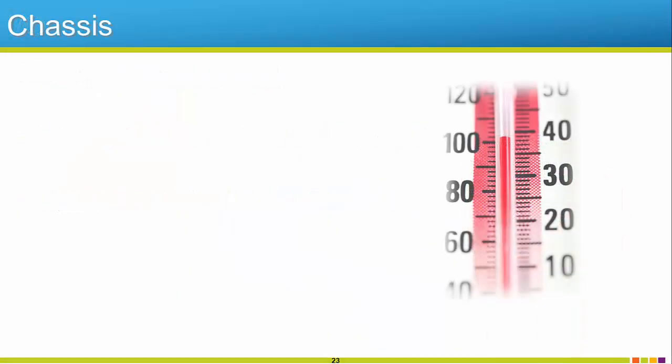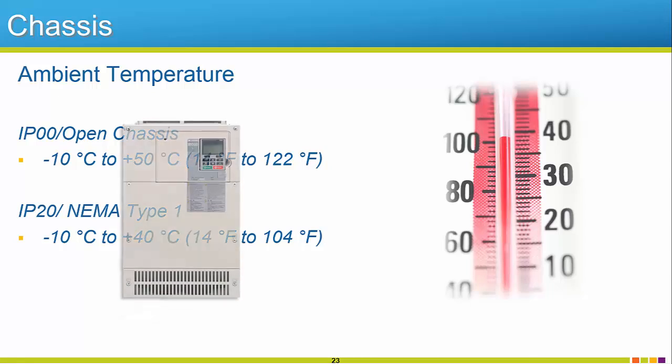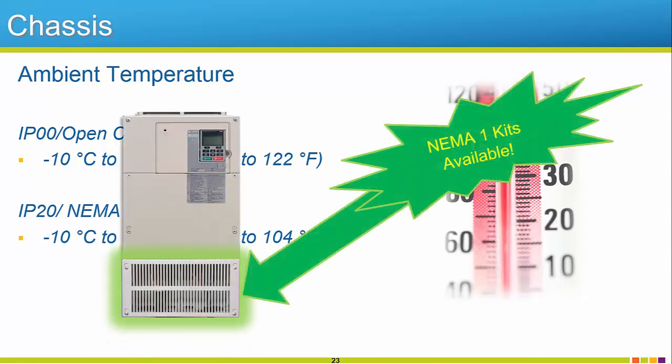The R1000 comes in both open chassis and NEMA Type 1 enclosures. The IP00, or open chassis type units, can operate in an ambient temperature of minus 10 degrees to 50 degrees Celsius. The IP20, also known as NEMA Type 1 chassis units, have an ambient temperature range of minus 10 degrees to 40 degrees Celsius. Additional environmental specs can be found in the R1000 technical manual. Is a NEMA 1 type enclosure a necessity? Well don't worry, because NEMA 1 kits are available for all open chassis units.